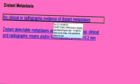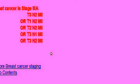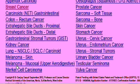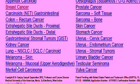Now let's go back to the contents page again. I want to demonstrate one more cancer. There we are on the contents page. Let us click on testicular cancer.